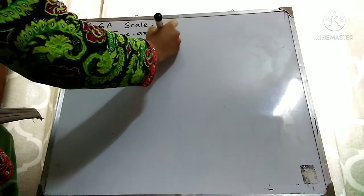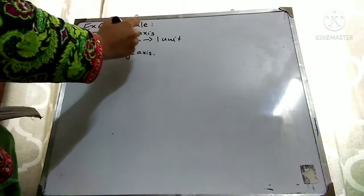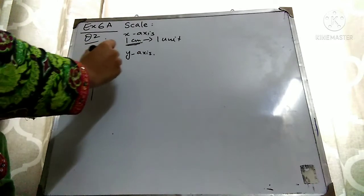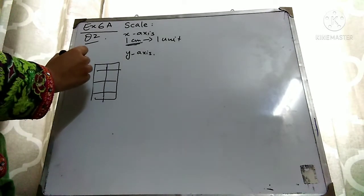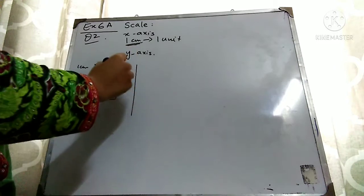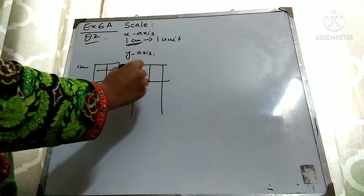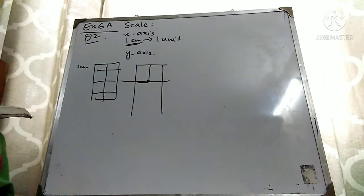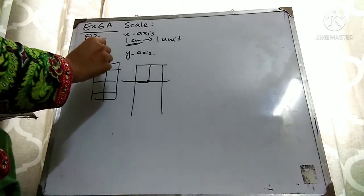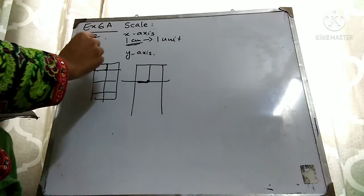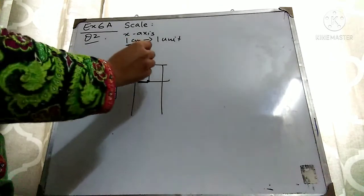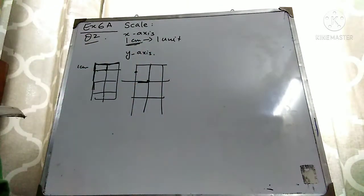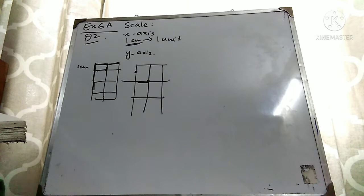One centimeter to represent one unit means one centimeter to one unit. On a graph paper you can see these small boxes — one small box is equal to one centimeter. But if you are having a graph paper of big boxes, then half of that big box is equal to one centimeter.